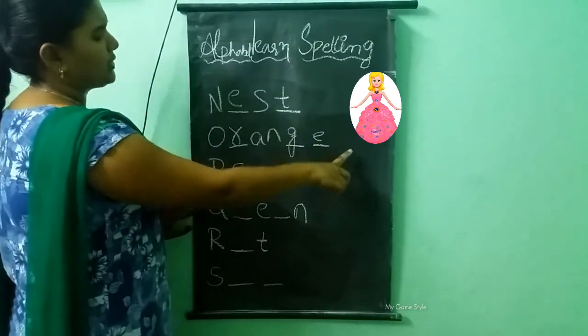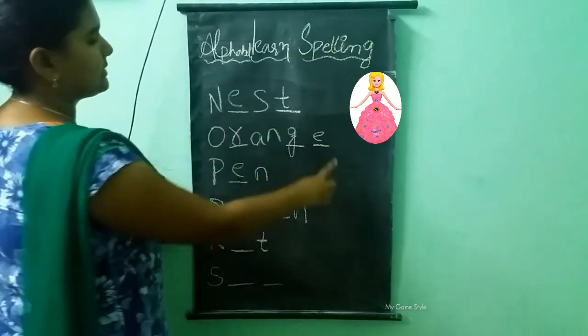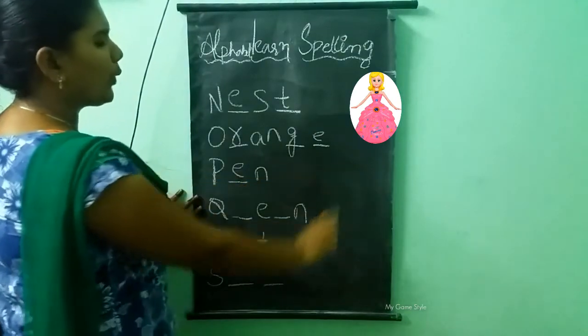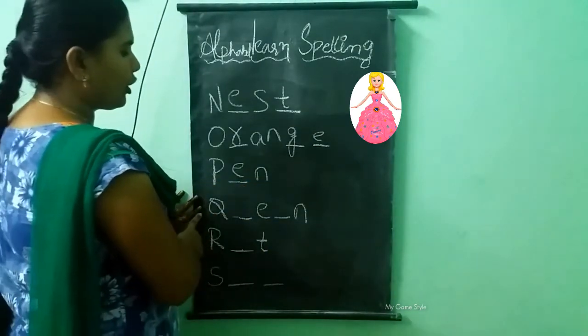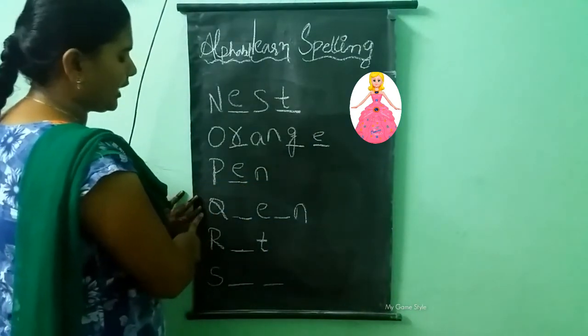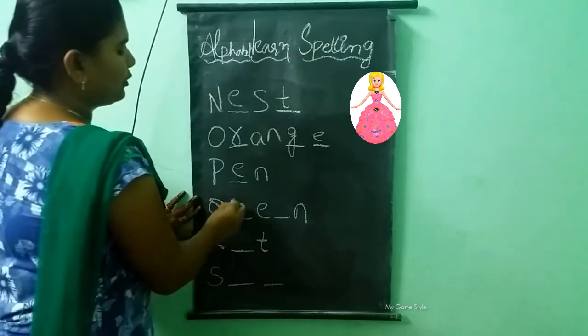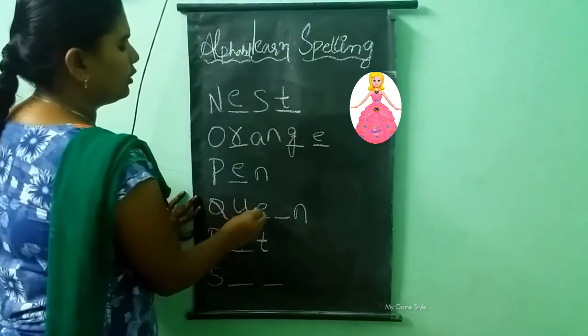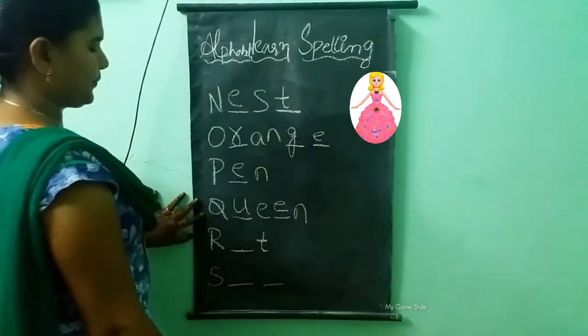What picture is this? This is a queen. What is the spelling of queen? Q-U-E-E-N. Queen.